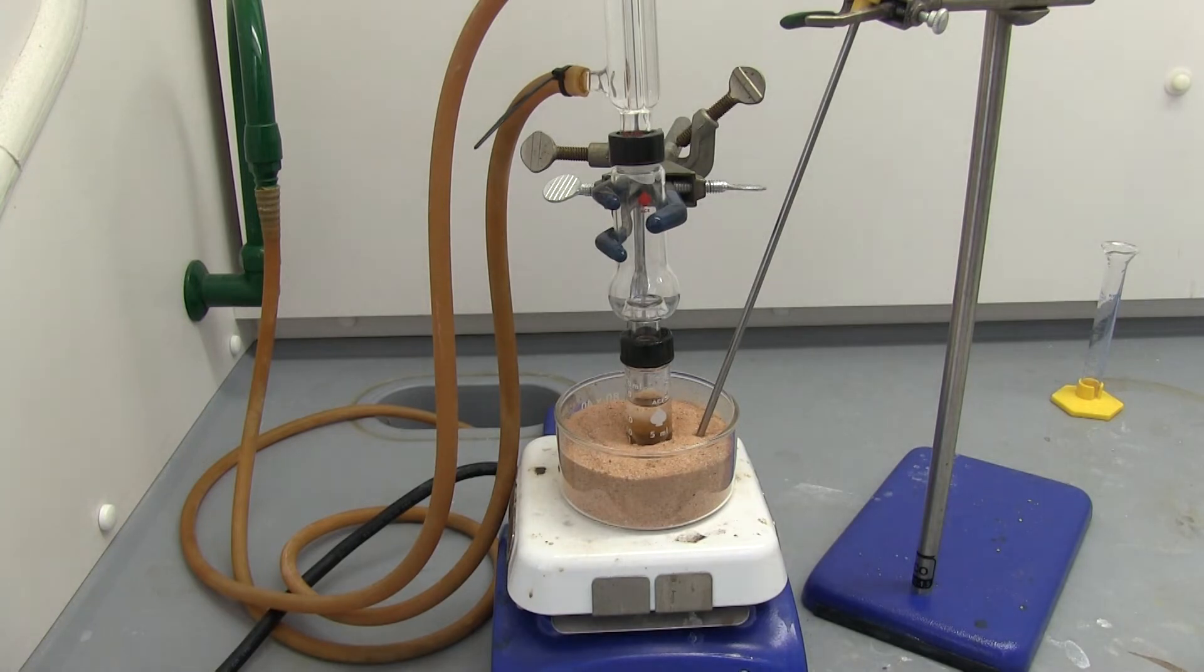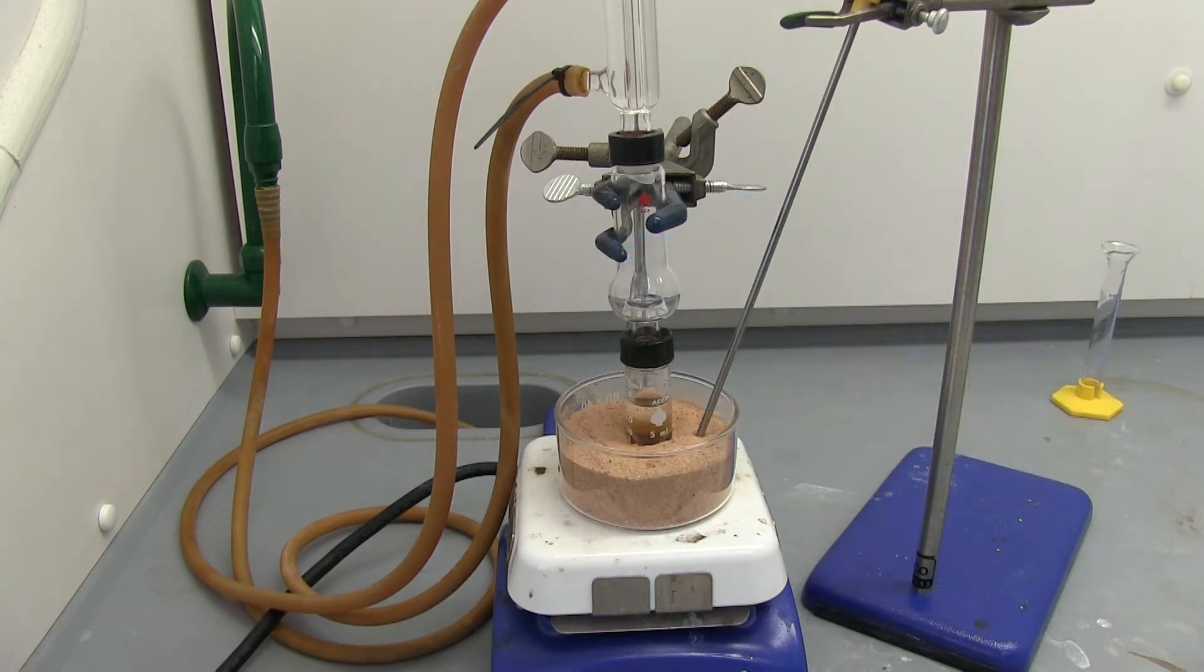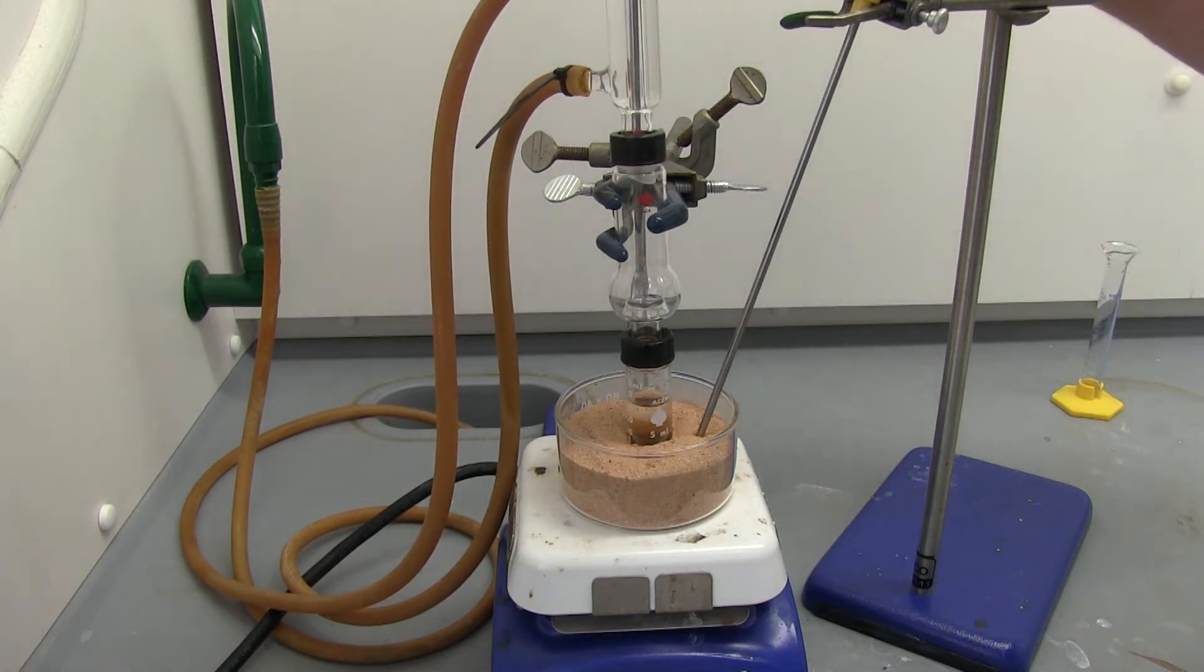We want our thermometer to hang out in here, the bulb tip of it, so that we're catching the temperature of the distillate or the vapor as it comes out. About there.